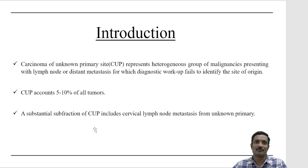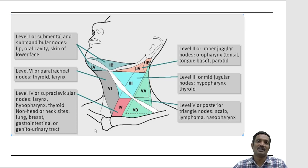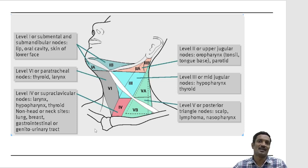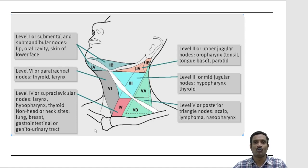Today we are discussing secondaries in the neck node in the absence of a primary. About 5% of all head and neck tumors are carcinomas of unknown primary. These patients come with a neck mass, the FNAC shows a secondary, but on clinical examination no primary is found. The different levels of the lymph nodes in the neck have been discussed previously. Most commonly patients present with upper and middle neck lymph nodes — levels 2 and 3 — and level 4 is not uncommon.